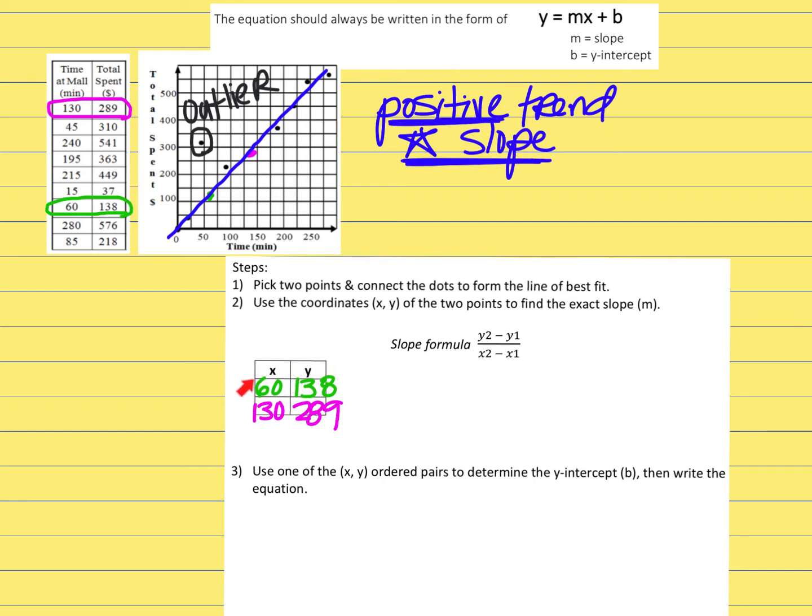Okay, now I want to take these ordered pairs and put them into my equation for finding slope y2 minus y1. So here's y2 minus y1 all over x2 minus x1. So I have 289 minus 138 over 130 minus 60. Type that in your calculator. You should get 150 over 70. We're going to go ahead and simplify that down and it's going to be approximately 2.16. Okay, it's not exact. I rounded it, but it's 2.16. So this is going to be our slope when we get ready to build our equation.